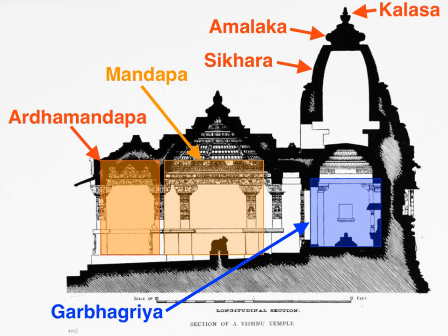There may be further mandapas or other buildings, connected or detached, in large temples, together with other small temples in the compound. Hindu temple architecture reflects a synthesis of arts, the ideals of dharma, beliefs, values, and the way of life cherished under Hinduism.